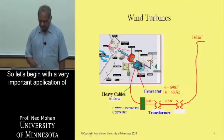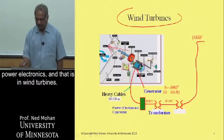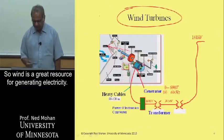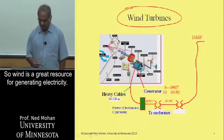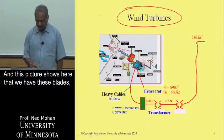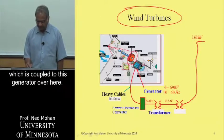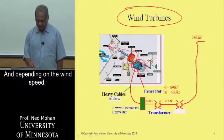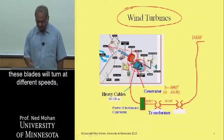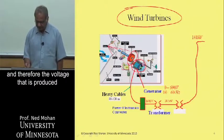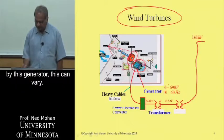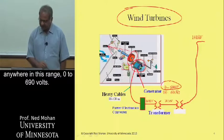Let's begin with a very important application of power electronics — wind turbines. Wind is a great resource for generating electricity. This picture shows blades coupled via a gearbox to a generator, and depending upon the wind speed, these blades would turn at different speeds. Therefore the voltage produced by this generator can vary — in this example, anywhere in the range of 0 to 690 volts.